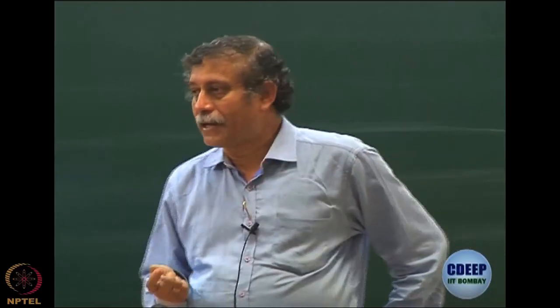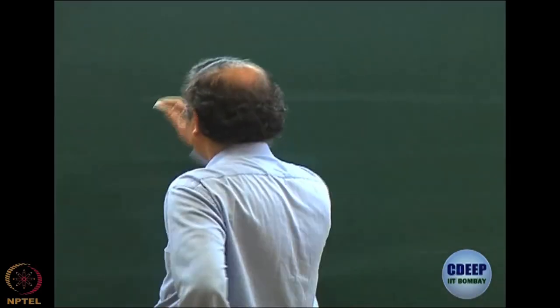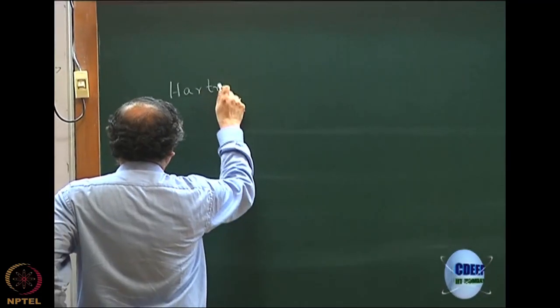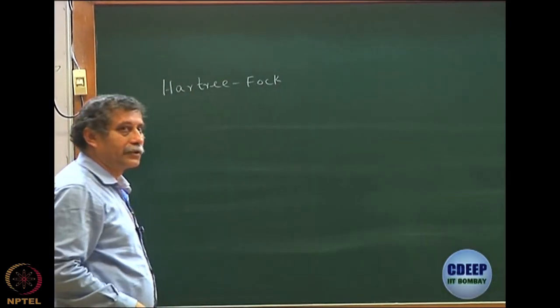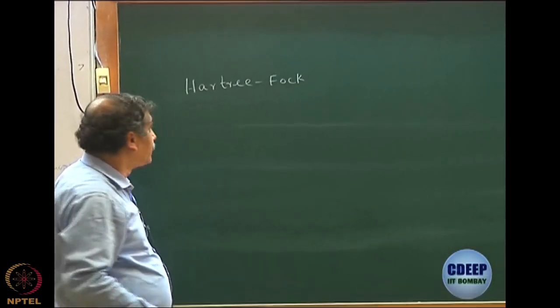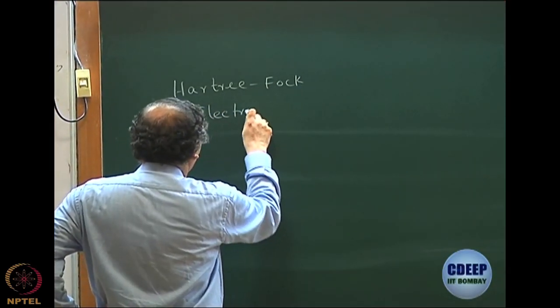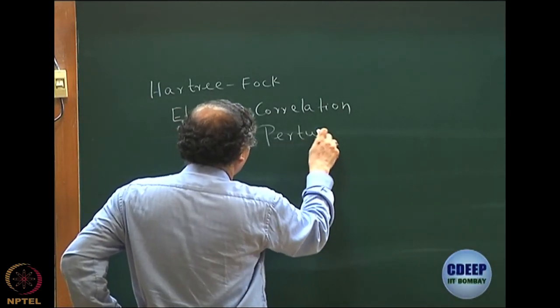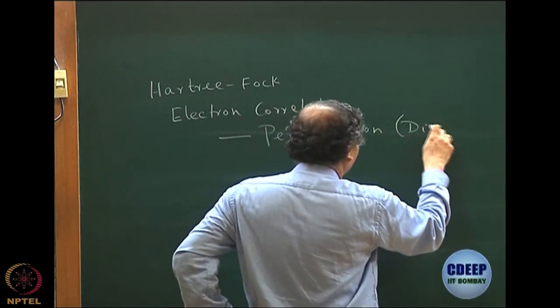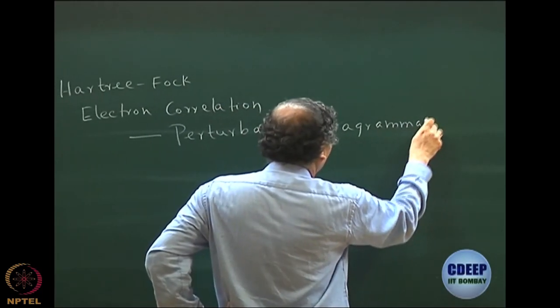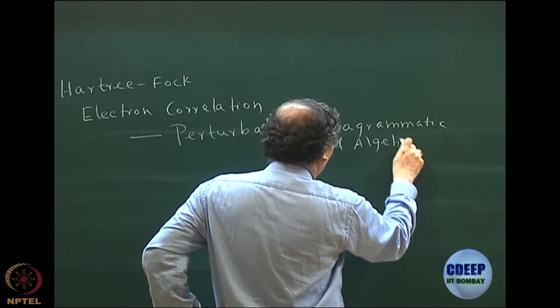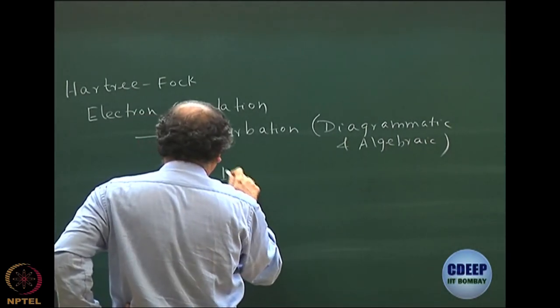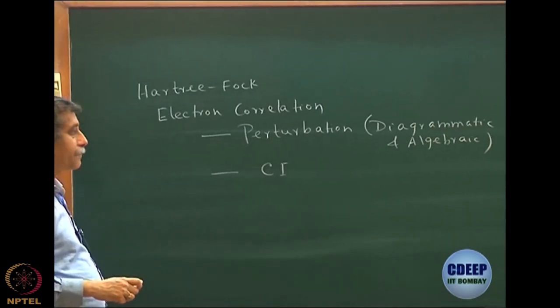Today I'm not going to do anything new; I think I am more or less finished except for a review and telling qualitatively what other theories are possible. We have mainly described the many-electron problem, in particular Hartree-Fock, which is the best uncorrelated theory and the reference point from where all electron correlations start. We then discussed electron correlation as an important topic, developing perturbation theory — both algebraic and diagrammatic — and CI, the configuration interaction, as the two major methods of electron correlation.